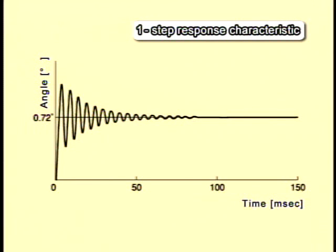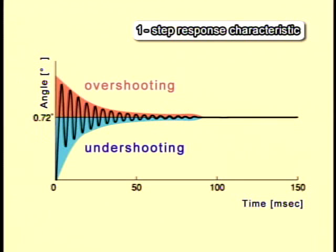The portion going forward past 0.72 degrees is called an overshooting, and the one coming backward past it is called an undershooting. These overshootings and undershootings are the causes of the vibrations in the stepping motor.